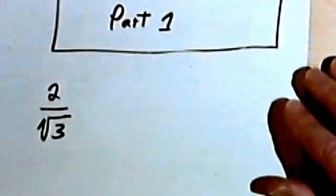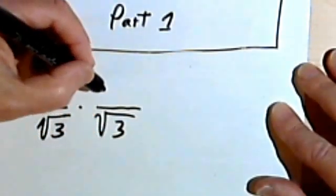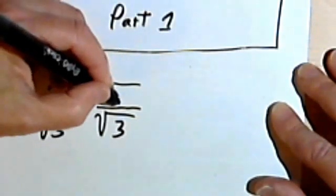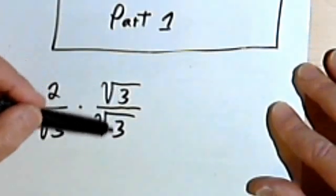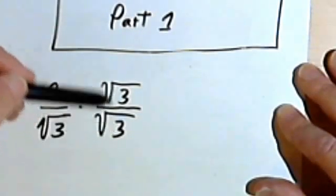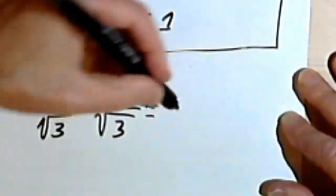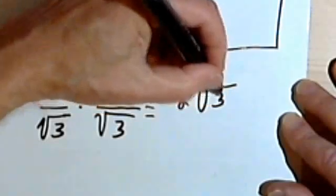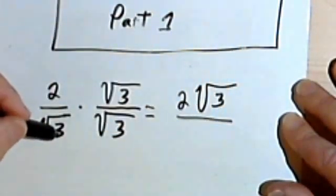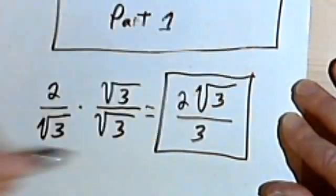So let's go back to the original problem. If I want to get rid of the square root of 3, I'll have to multiply it by the square root of 3. But I can't multiply the denominator of a fraction without also multiplying the numerator by the same thing, so I'm going to multiply by the square root of 3 over the square root of 3. This makes sense because any number over itself equals 1, and we can multiply a number by 1 without changing it. Carrying out the multiplication, I have 2 times the square root of 3 over the square root of 3 times the square root of 3, which is just 3. I can't reduce this fraction, so my answer is 2 times the square root of 3 over 3.